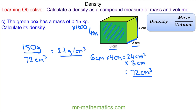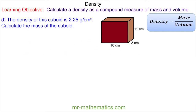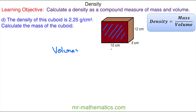Let's try one final question. The density of a cuboid is 2.25 grams per centimeter cubed, and we're asked to calculate the mass. Pause the video and try it yourself. We again need to work out the volume: the area of the cross section is 10 multiplied by the height of 12, giving 120 centimeters squared, multiplied by the depth of 3 centimeters, so the volume is 360 centimeters cubed.